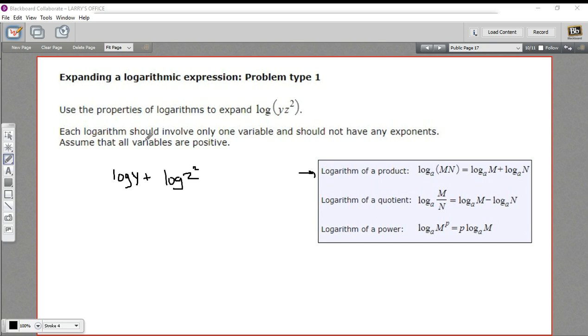This note here says each logarithm should involve only one variable and should not have any exponents. We have an exponent here. This is z to the second. So I can also use the logarithm of a power rule here that says that if you have this number to a power and you're taking a log of it, that's the same as that power multiplied by the outside of this.